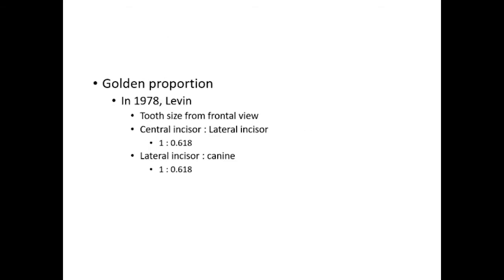In 1978, Rabin carried forward Lombardi's work and suggested using the golden proportion for establishing relative tooth size from a frontal view. He proposed the perceived width of the maxillary central incisor should be in golden proportion to the width of the lateral incisor, and that the width of the lateral incisor should also be in golden proportion to the perceived width of the canine.